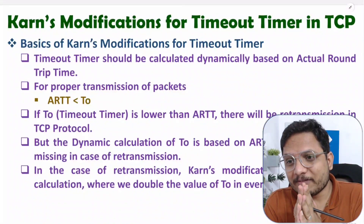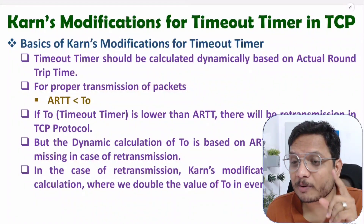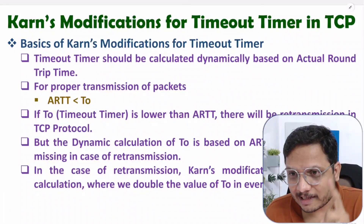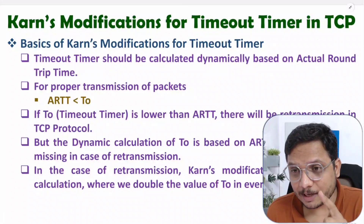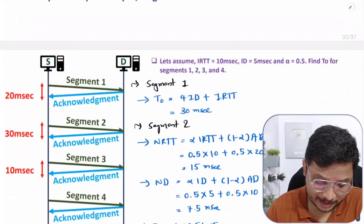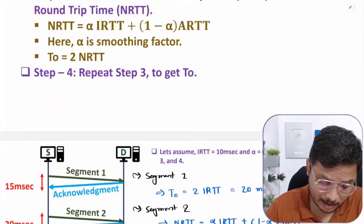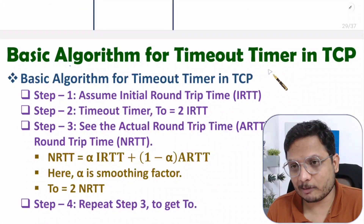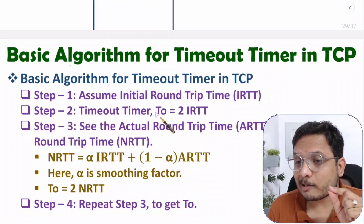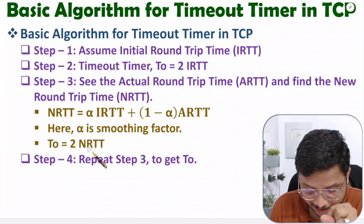Hello friends, welcome to Engineering Funda. In this video I'm going to explain Karn's modification for timeout timer calculation in TCP. Timeout timer calculation should be dynamic, and I have explained this by two different algorithms in my last two videos — Jacobson's algorithm and the basic algorithm for timeout timer calculation. This timeout timer, which is T0, should be calculated dynamically.